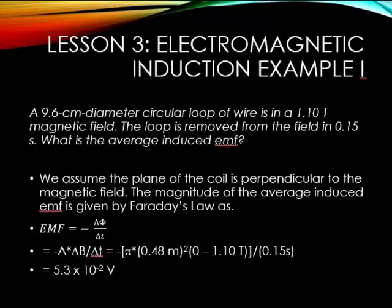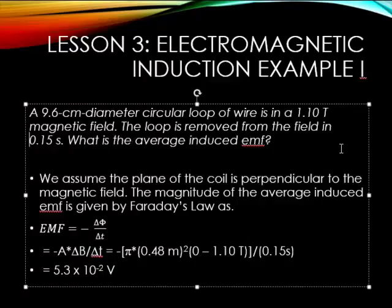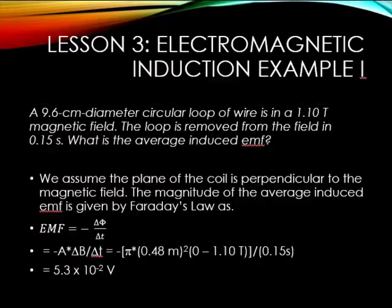So let's look at an electromagnetic induction example. We have a 9.6 centimeter diameter circular loop of wire in an external 1.1 tesla magnetic field. The loop is removed from the field in 0.15 seconds. And then we want to know what is the average induced EMF.